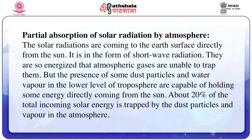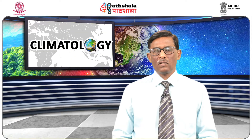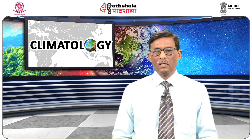Now, let us discuss about the partial absorption of solar radiation by the atmosphere. The solar radiations coming to the earth's surface directly from the sun are in the form of short wave radiation. They are so energized that the atmospheric gases are unable to trap them. But the presence of some dust particles and water vapor in the lower level of the troposphere are capable of holding some energy directly coming from the sun. About 20% of the total incoming solar energy is trapped by the dust particles and water vapor in the atmosphere.